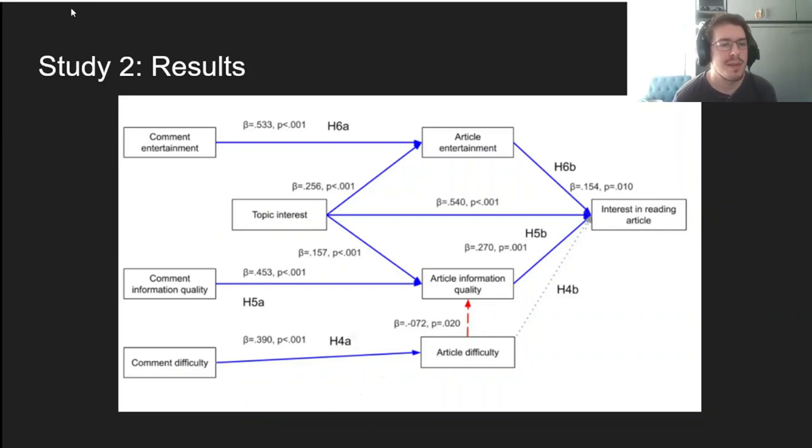Finally, we conducted a path analysis to examine the relationship between comment variables, perceived article values, and likelihood to read it. As expected, the qualities of our comments were all significantly related to the same expected qualities for the article, indicating the use of similarity heuristic. However, while most of these variables significantly predicted interest in reading the article, the article's expected difficulty actually didn't. Instead, it was negatively related to information quality, causing an indirect effect on likelihood to read.